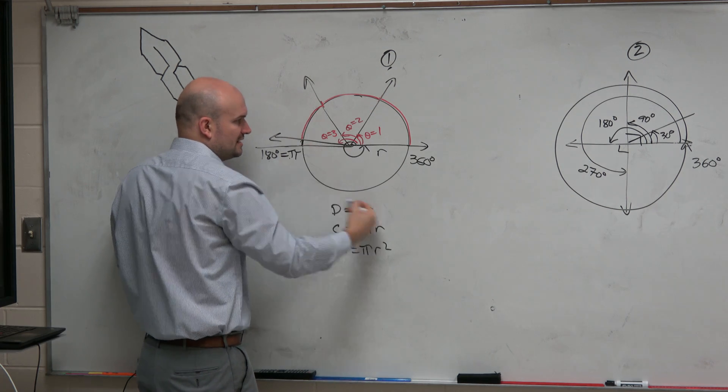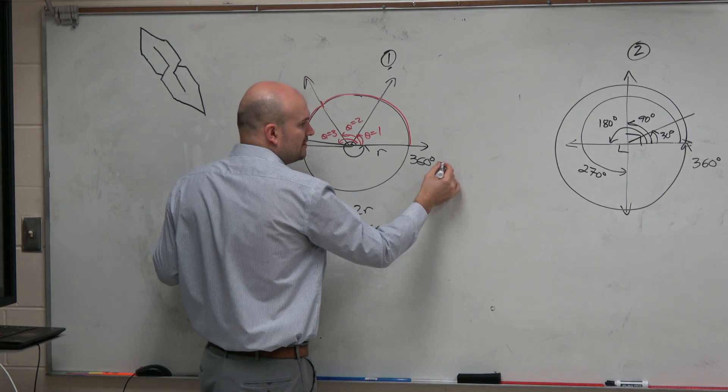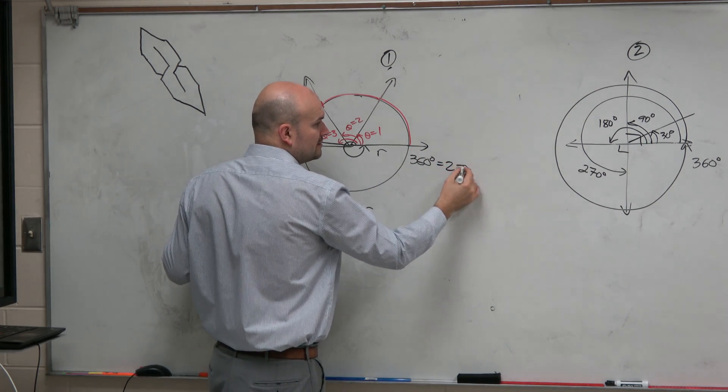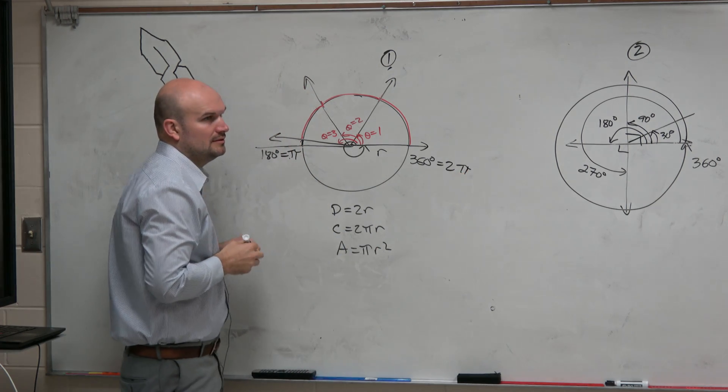then from here to here is pi. That means from here to here is going to be 2 pi. All right?